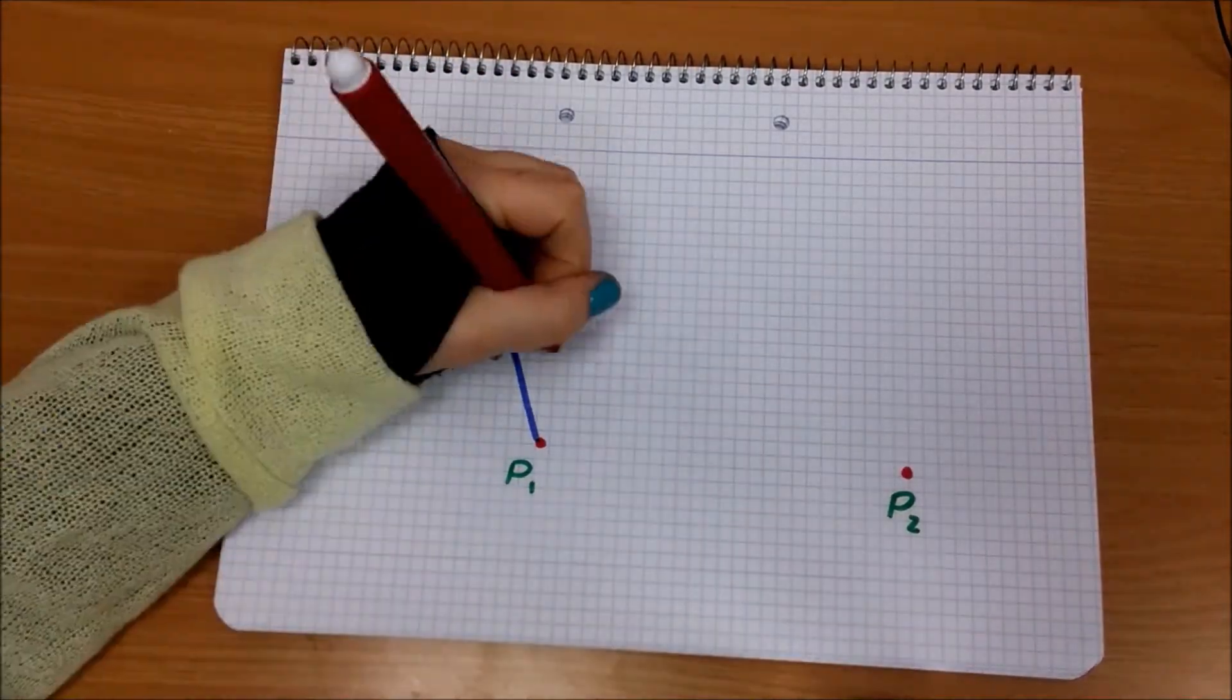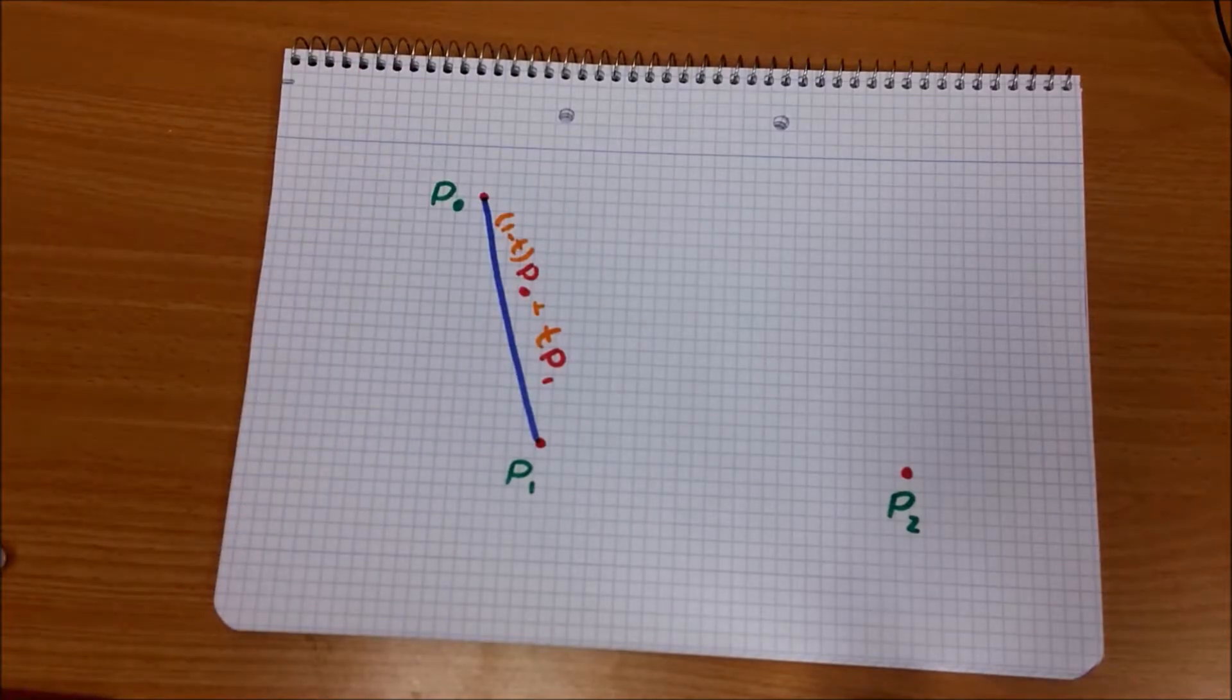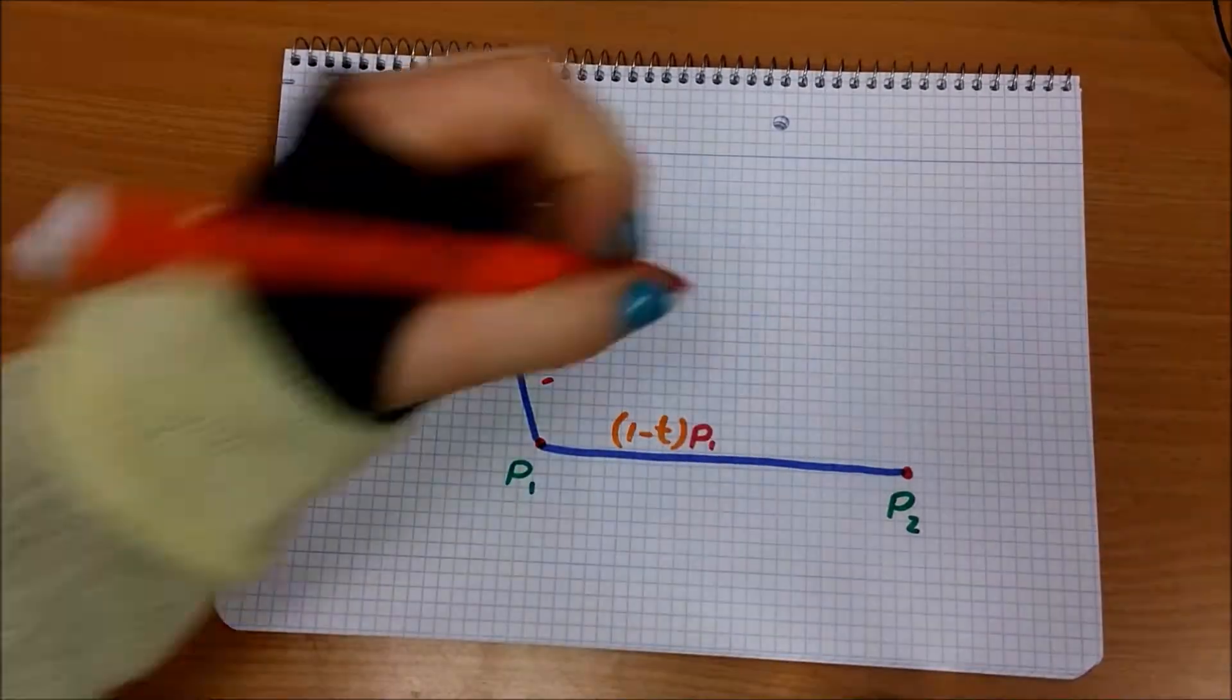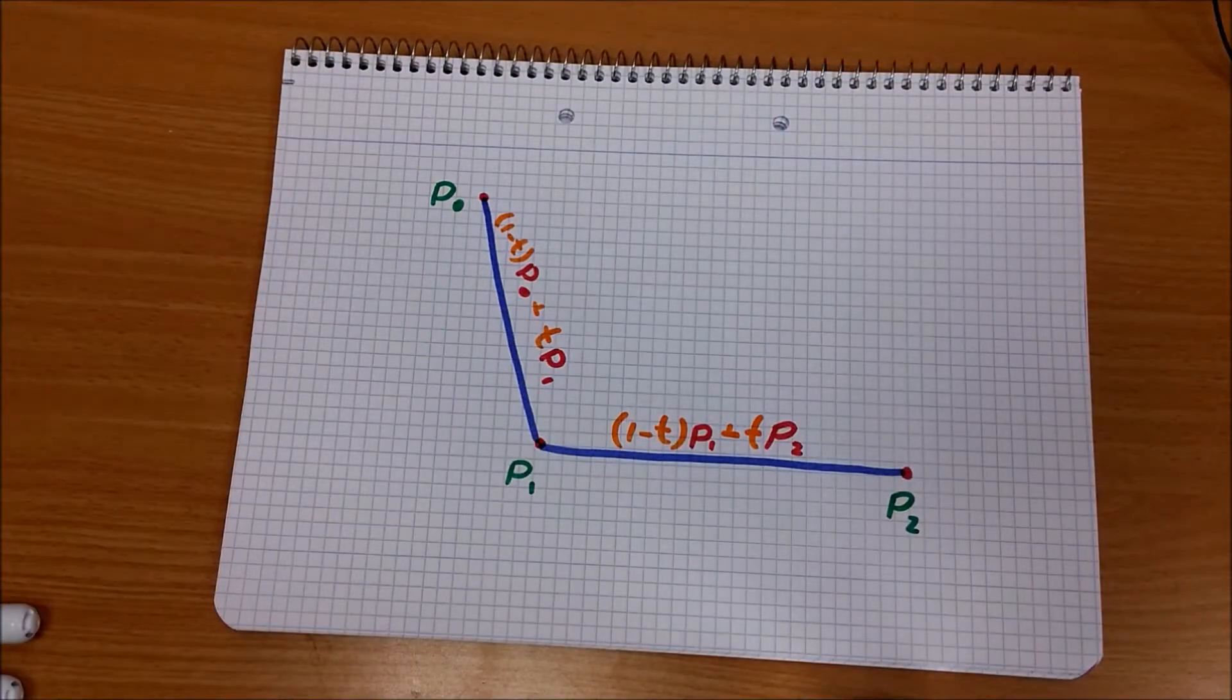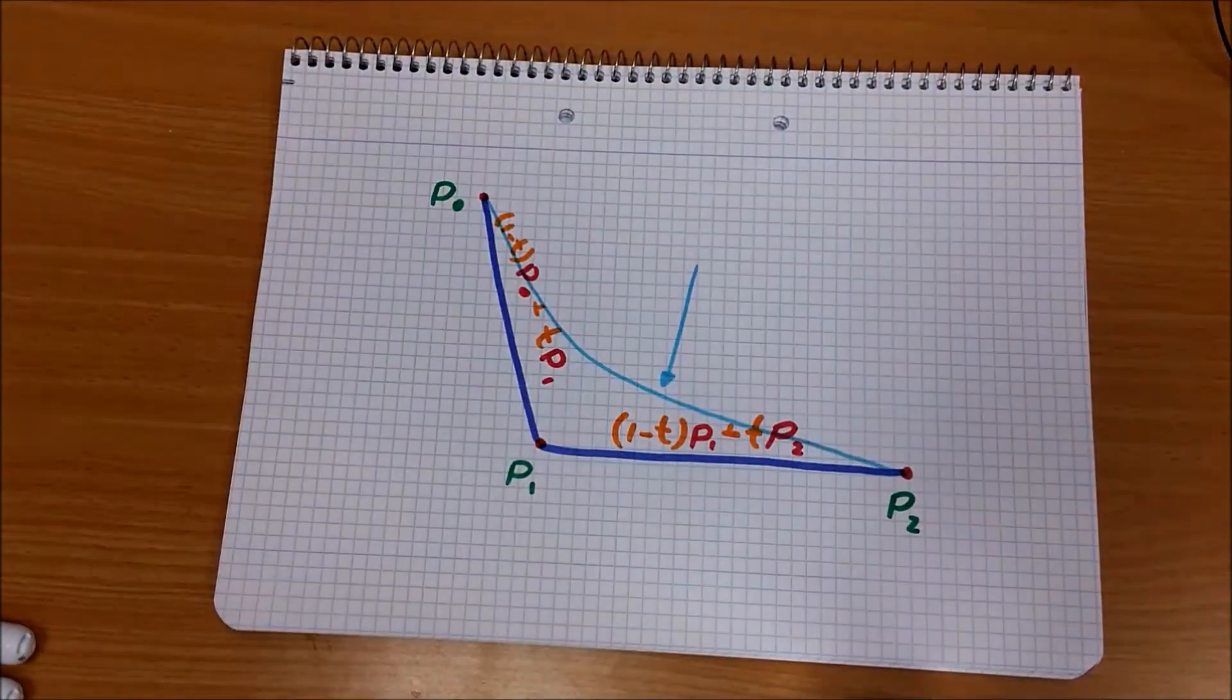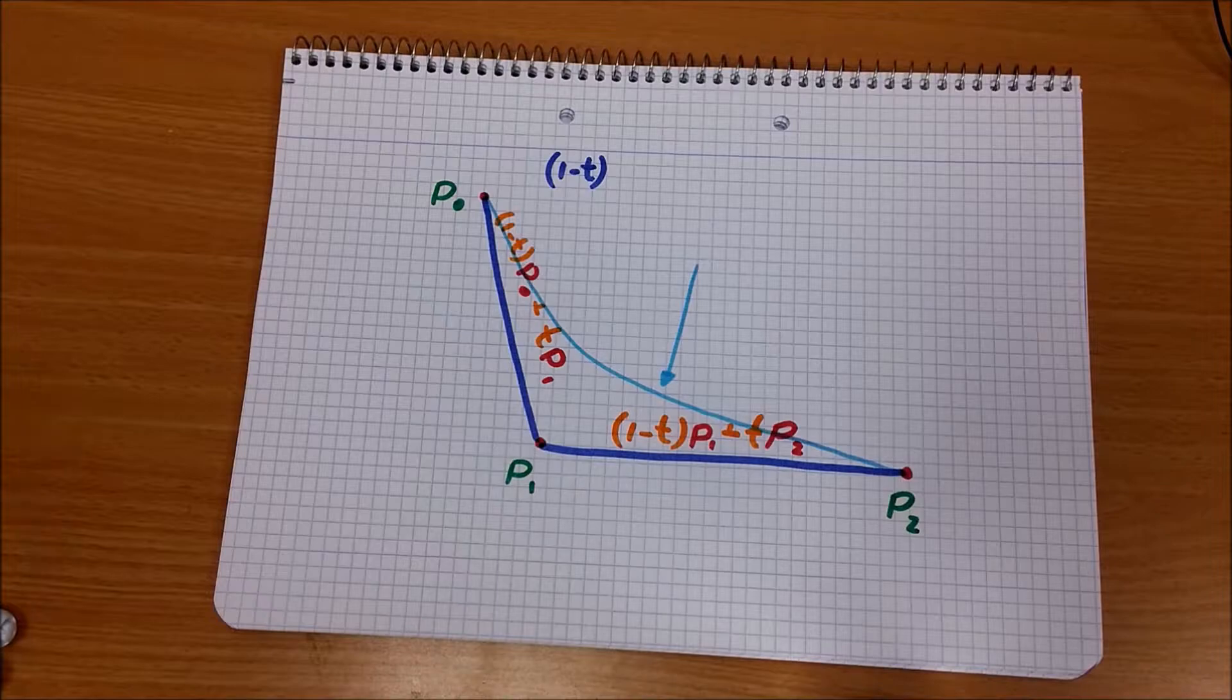Instead of evaluating each point, we want a way to find a formula for the entire curve. We get the formula by applying the same function as for the Linear curve recursively.